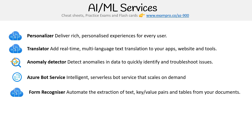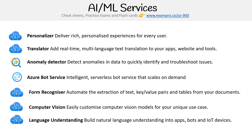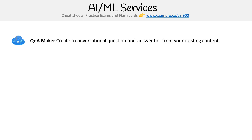Form Recognizer automates the extraction of text, key-value pairs, and tables from your documents. You have Computer Vision — easily customized computer vision models for unique use cases. Language Understanding lets you build natural language understanding into apps, bots, and IoT devices. And Q&A Maker lets you create a conversational question-and-answer bot from your existing content.